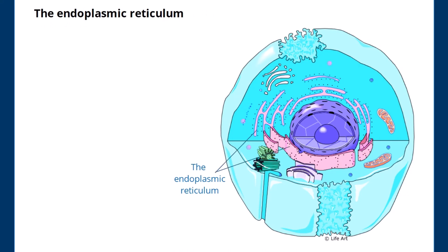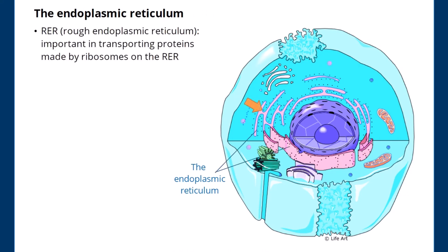The Endoplasmic Reticulum. RER, rough endoplasmic reticulum, is important in transporting proteins made by ribosomes on the RER. SER, smooth endoplasmic reticulum, is important in lipid synthesis.